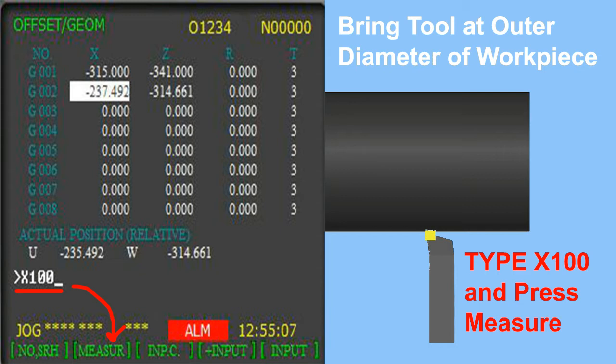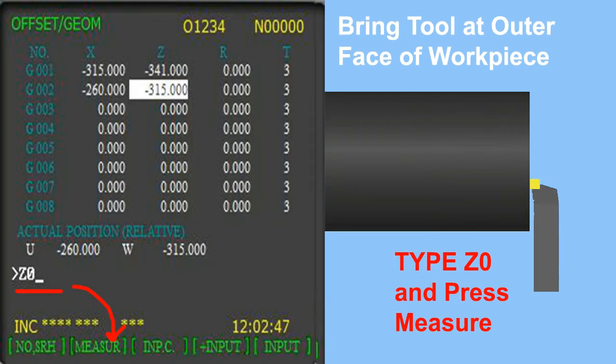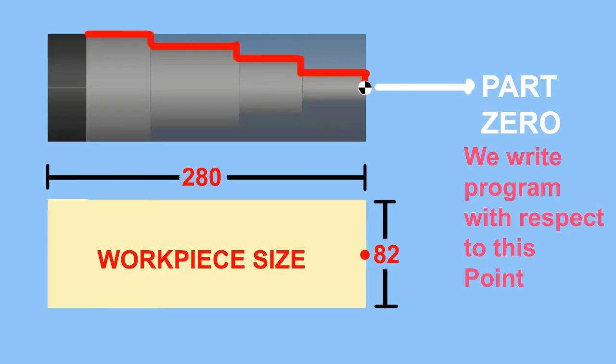Similarly, with jog mode, bring your tool to touch the outer face of your workpiece. Then go to Offset Setting, in register 02, bring your cursor to Z and type Z0.0 — because here we want the Z axis as our zero point.